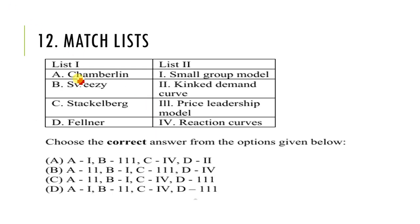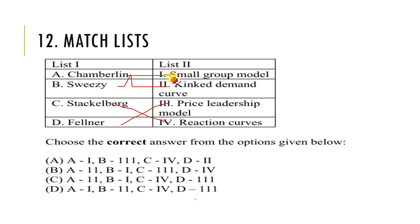Next: match list 1 to list 2. Chamberlin corresponds to the large group model; Kinked demand corresponds to Sweezy; Stackelberg corresponds to the reaction curve model; Felner corresponds to the price leadership model. So the answer is A-1, B-2, C-4, D-3. Option D is the correct option.